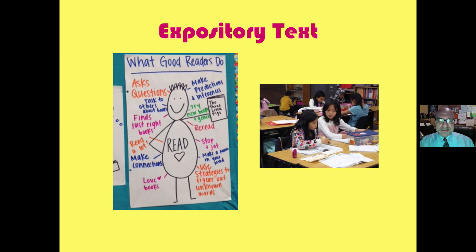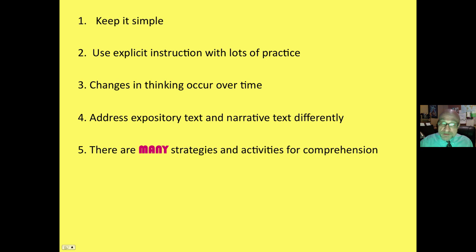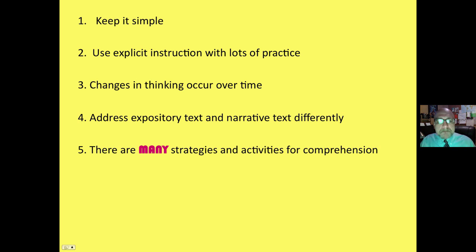For expository text, we teach study skill strategies for comprehension — specific things to enable us to create meaning with print. These are very simple study skill strategies for comprehension. Remember, keep it simple. Use explicit instruction with lots of practice. Change in thinking, which is what comprehension is, occurs over time. You need to address expository text and narrative text differently, and there are many strategies and activities for comprehension. This was just a sample.